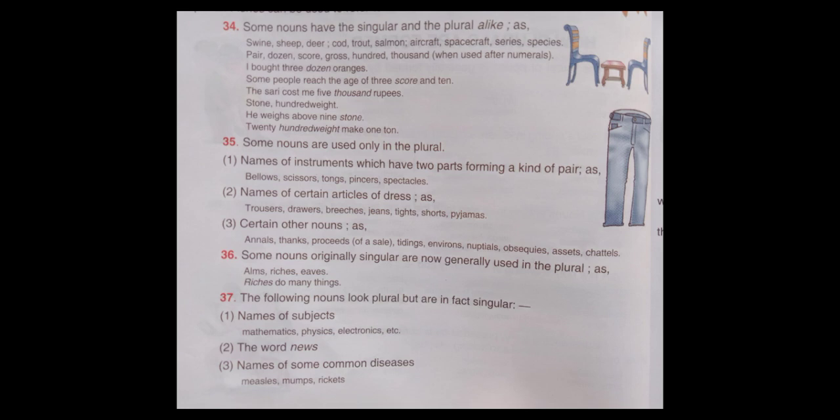Some nouns are used only in the plural. Names of instruments which have two parts forming a kind of pair, as: bellows, scissors, tongs, pincers, spectacles. Names of certain articles of dress, as: trousers, drawers, breeches, jeans, tights, shorts, pajamas. Certain other nouns, as: annals, thanks, proceeds, riches, valuables, environs, nuptials, obsequies, assets, chattels.